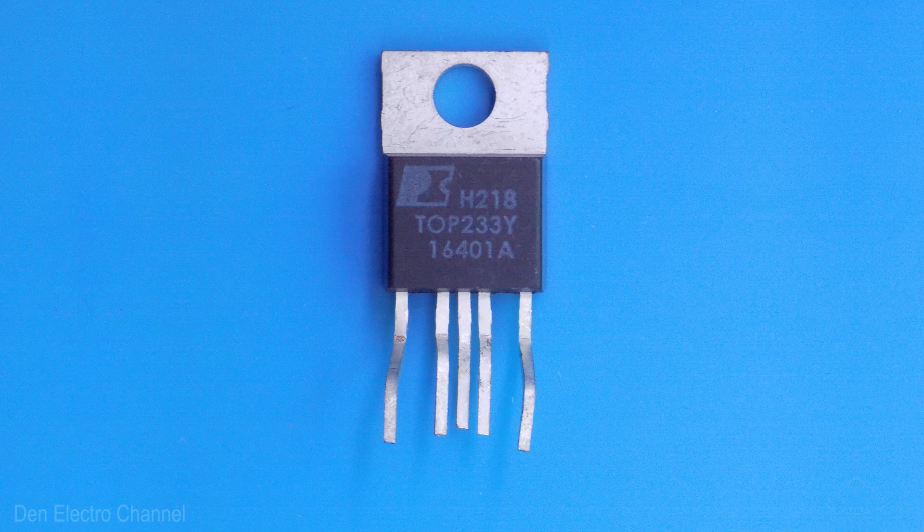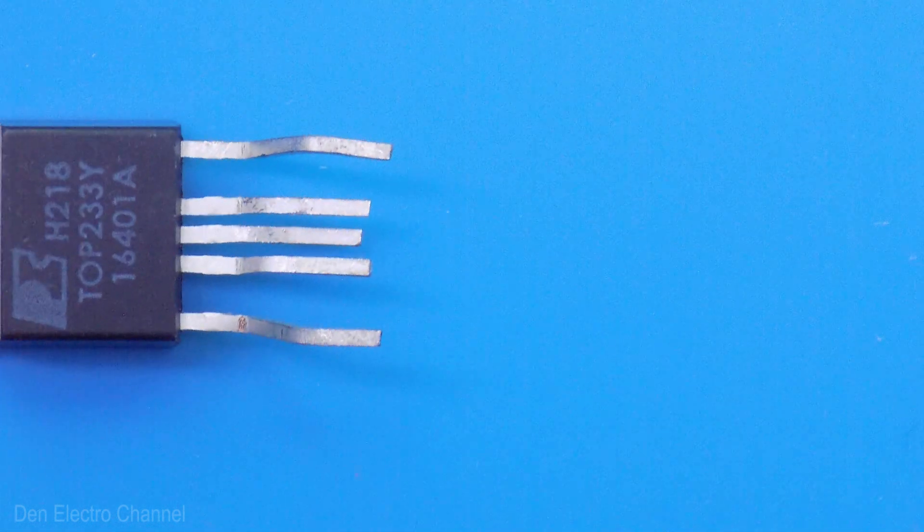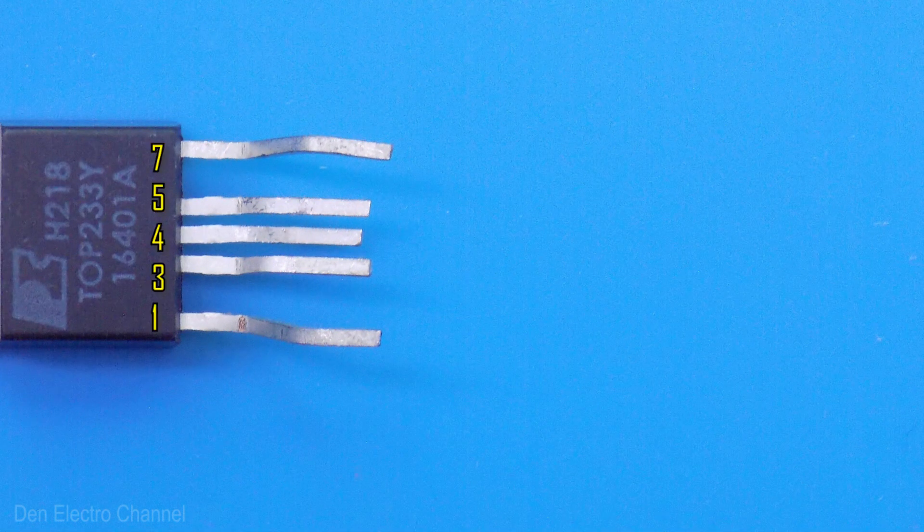The TOP233Y chip looks like this. It looks like a transistor. It has five legs, but they are counted from the first to the seventh. The second and sixth legs seem to be missing.